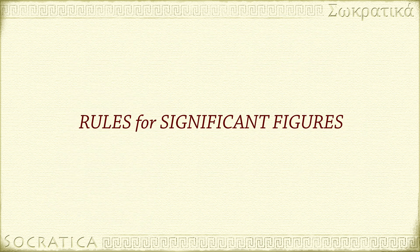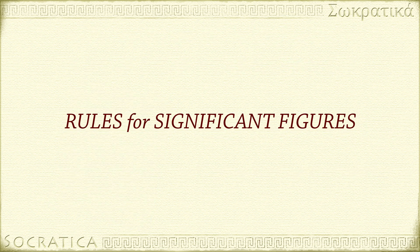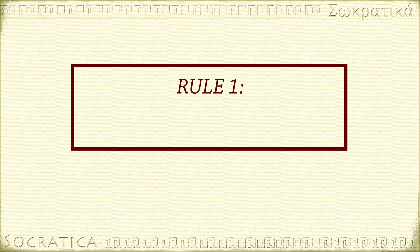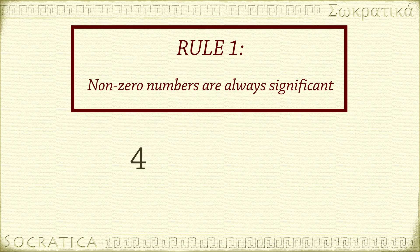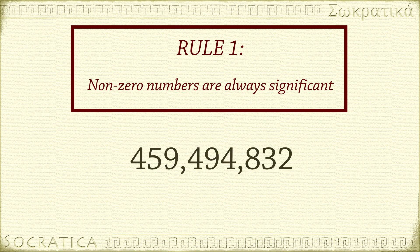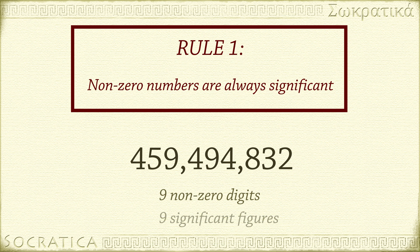Now let's turn to the rules for significant figures, and we'll apply each one. Rule number 1: non-zero digits are always significant. In the number 459,494,832, there are 9 digits. All of them are non-zero, so according to rule 1, all 9 digits are significant.